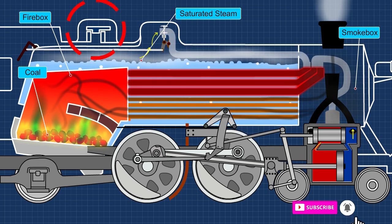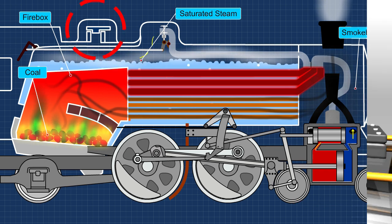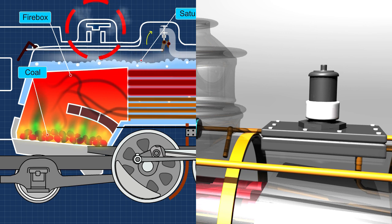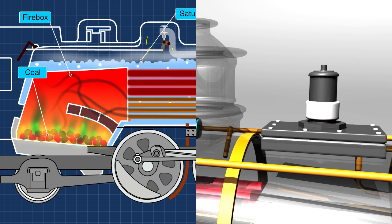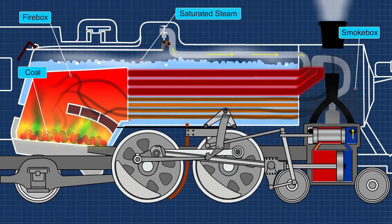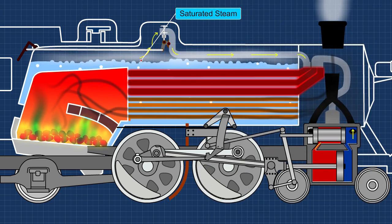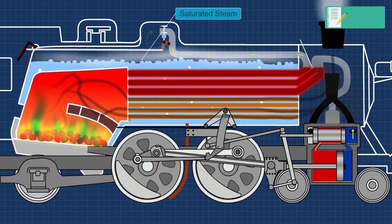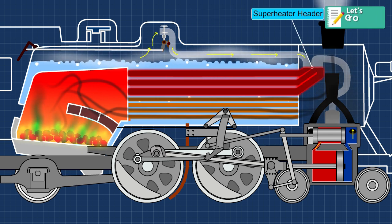A safety valve located on top of the boiler is used to release steam in case the pressure in the boiler rises to a dangerous intensity. Next, the saturated steam flows to the superheater header through the main steam pipe.